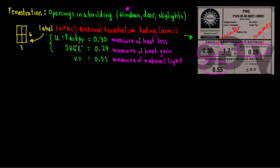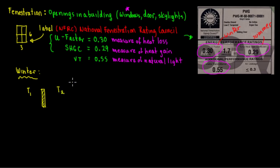Let's make a quick example so we understand this better. For a heat load calculation for heating — let's talk about winter. We need our outdoor and indoor conditions. I have my window; outside is temperature one and inside is temperature two. For the outside, depending on the location, we need to know our design temperature.